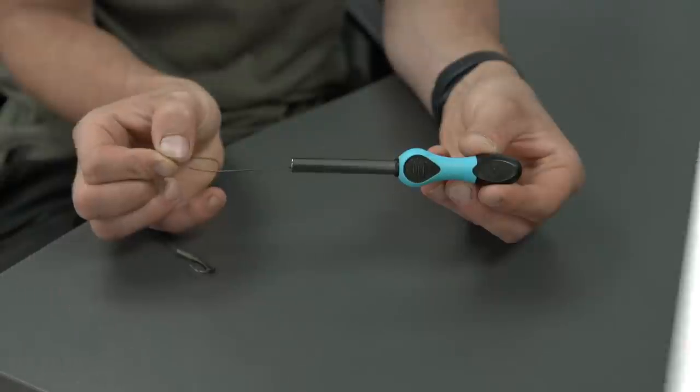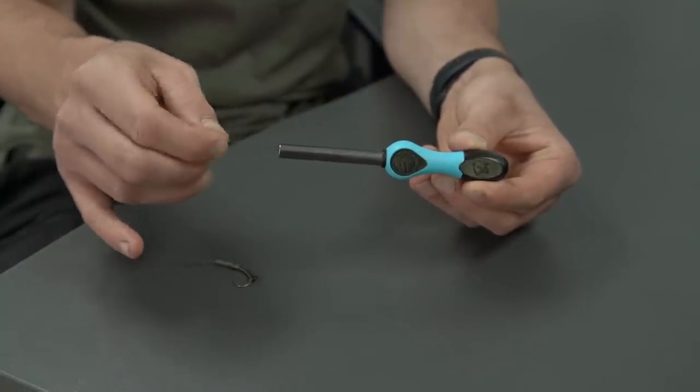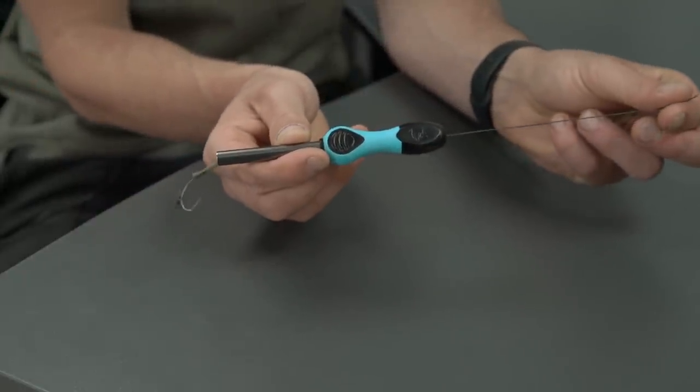Step two: feed the tag end of your hook link down through the brass tube and out the bottom of the shrinker until the bend of the hook is flush to the end of the brass tube.